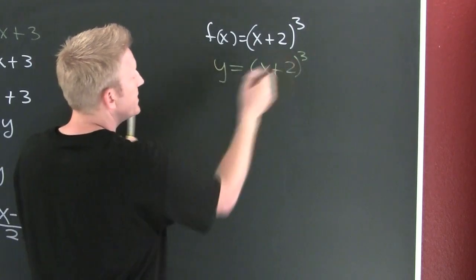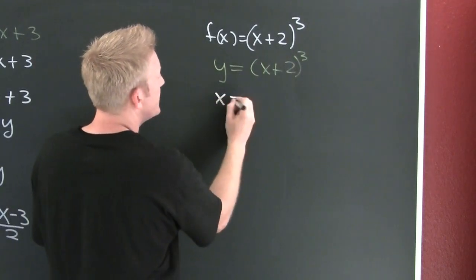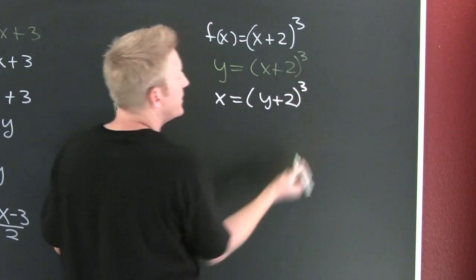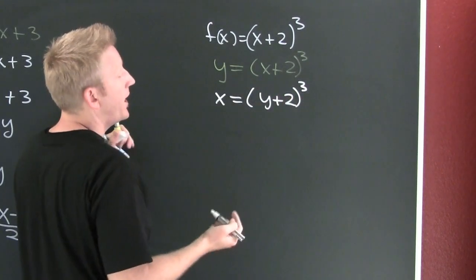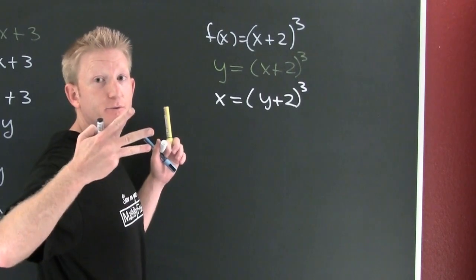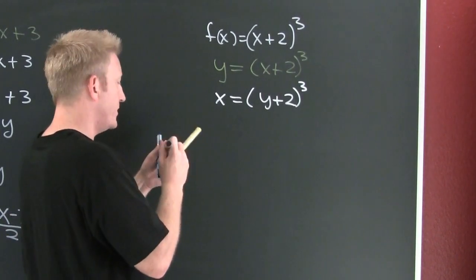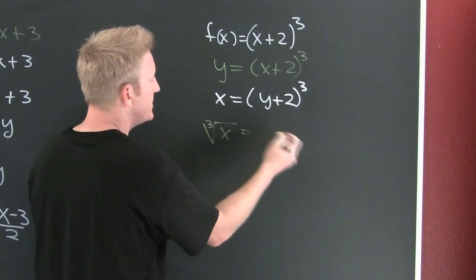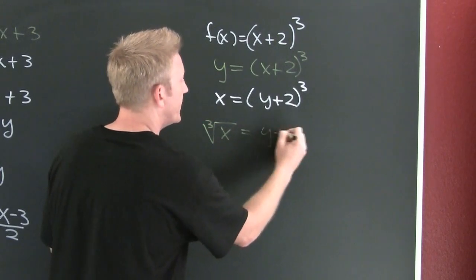Now I want to interchange x and y. I'm going to let x equal y plus 2 to the third. Now you need to solve for y. That means you need to take the third root of both sides. What you do on the one side, you must also do on the other. Here I have the third root of x is equal to y plus 2.